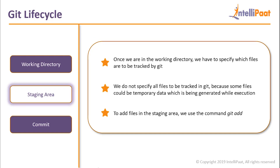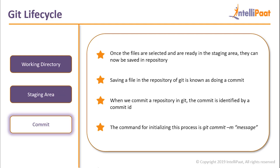That's why you have an option to stage files. In the staging area, you basically choose which files you want to commit. Imagine it like this: you have your working directory, and then you have a stage for Git. On the stage you put the files that you want to commit. Once you choose those files, they become staged — hence the term staging area. The files in the staging area are the files which are to be committed.